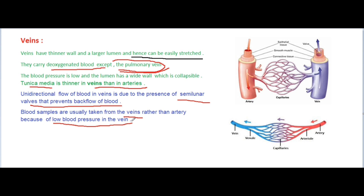To summarize vein features: they have thinner walls and are easily stretched; they carry deoxygenated blood except pulmonary vein; tunica media is thinner in veins than arteries; unidirectional flow of blood in veins is due to the presence of semilunar valves; and blood samples are usually taken from veins due to low blood pressure.